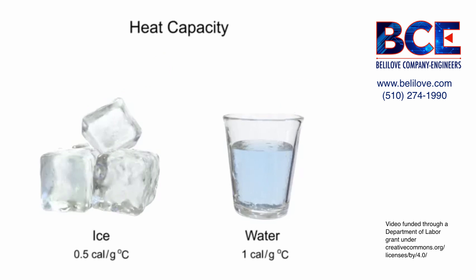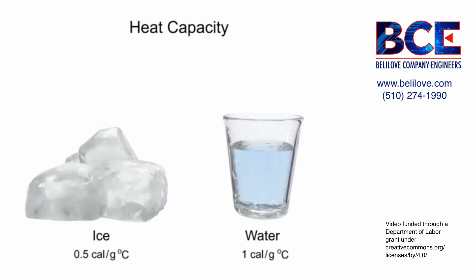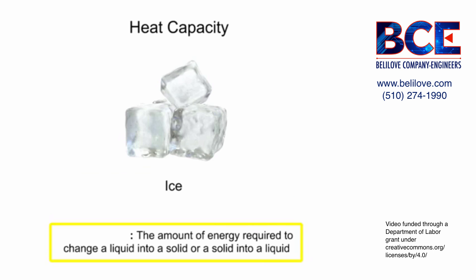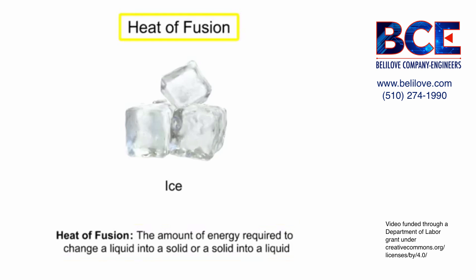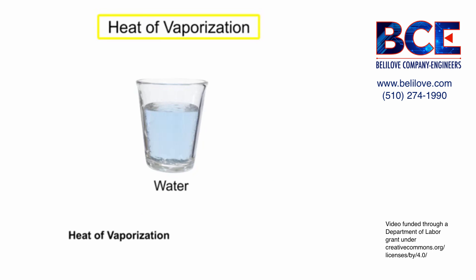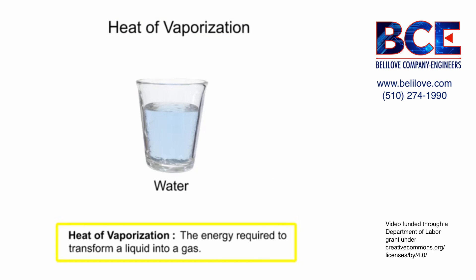The processes of phase change between solid, liquid, and gas also require a specific amount of heat energy. The amount of energy required to change a liquid into a solid or a solid into a liquid is known as heat of fusion. The amount of heat required to change 1 gram of ice to water is 80 calories. Similarly, the heat of vaporization is the energy required to transform a liquid into a gas. It requires 540 calories to change 1 gram of liquid water into a gas.